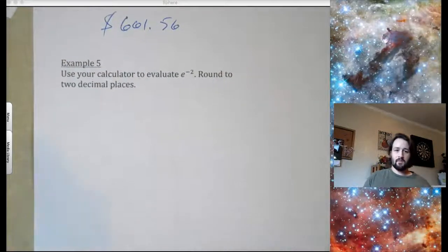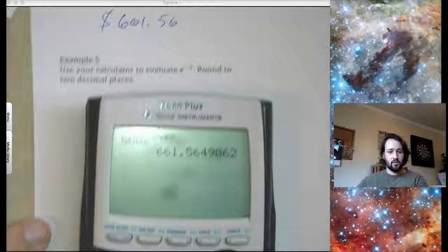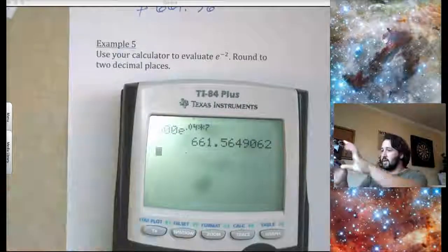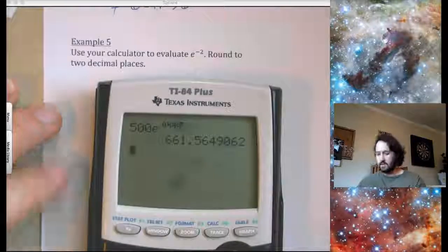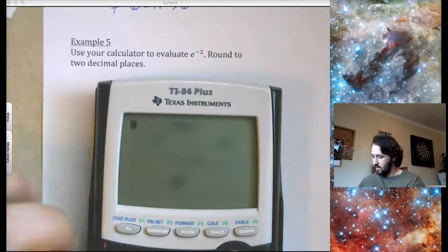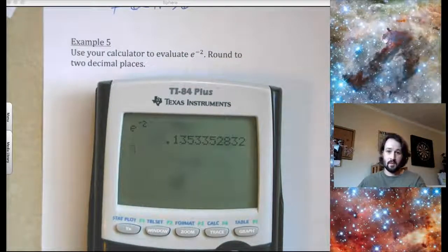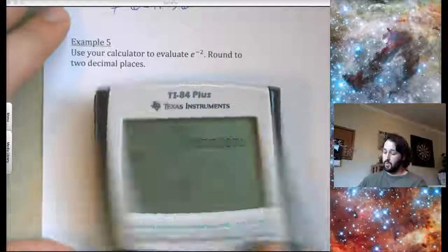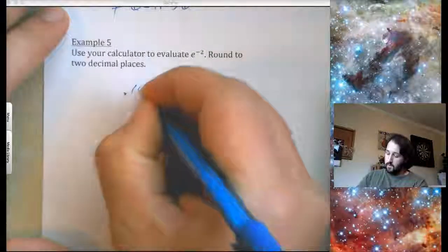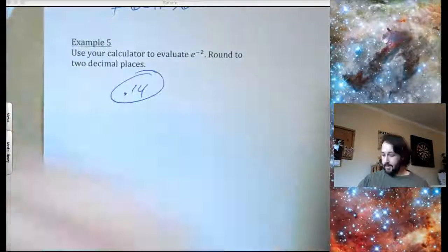All right. Use your calculator to evaluate E to the negative 2. Round to two decimal places. So this is super easy. I only did this example to show you how easy it was. Take that light off. You can't see anything. So if I put in E to the negative 2, or really E to the whatever, it will tell me what it is. Two decimal places. So this is 0.14. Hey, oh, that's my answer.